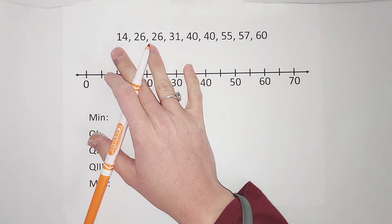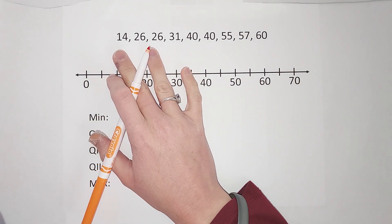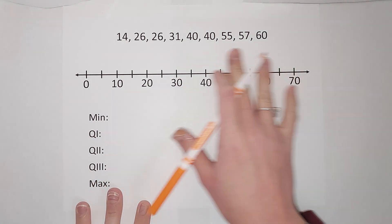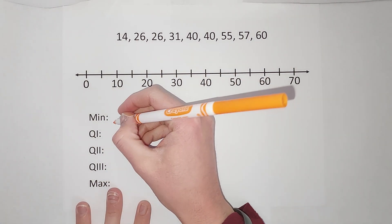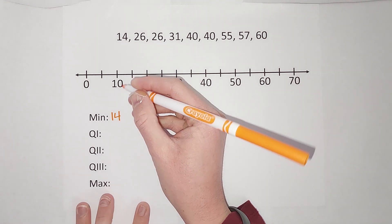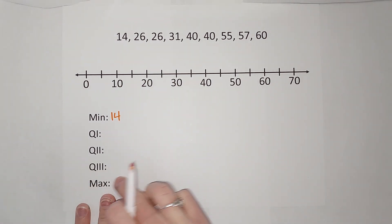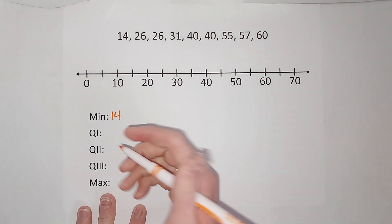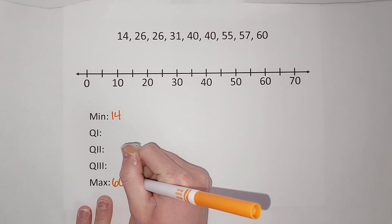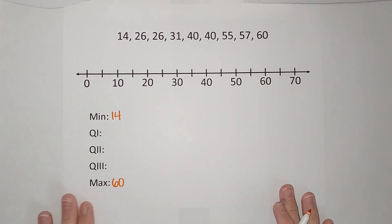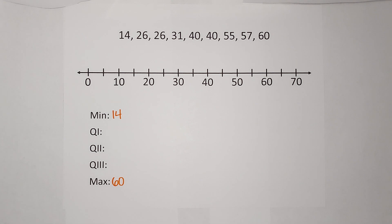It is very helpful to have the numbers in order from least to greatest. My lowest number is 14 — that's my minimum. My maximum, my highest number, is 60. So we already have two of the five pieces of information we need.